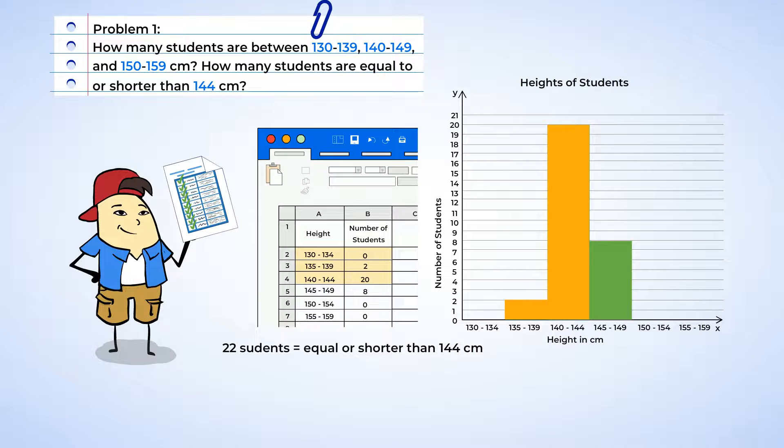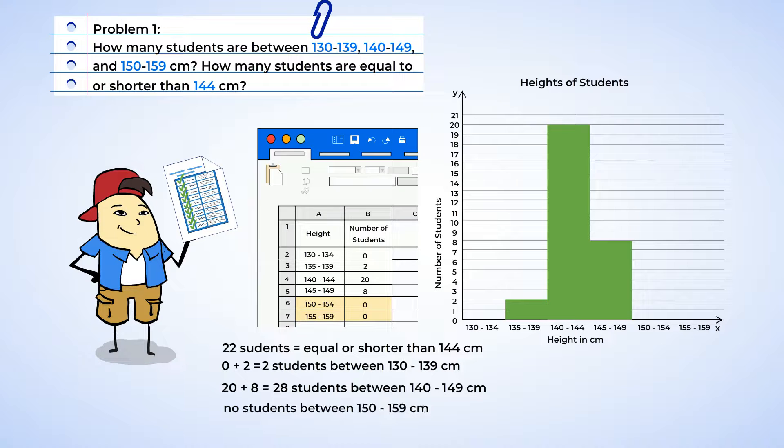And to answer the first question, we need to sum up the students in the first two buckets, 130 to 134, and 135 to 139, which is just two. And then the next two buckets can be added to find the number of heights from 140 to 149, which is 28. And lastly, 150 to 159 centimeters. There are no students in grade 6 that are within that height.